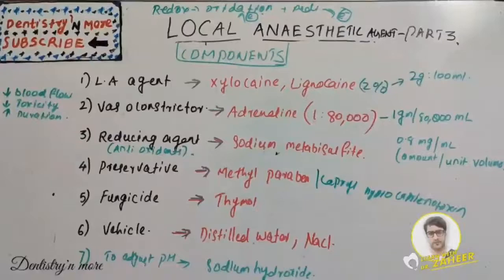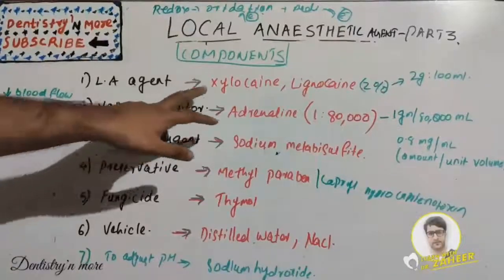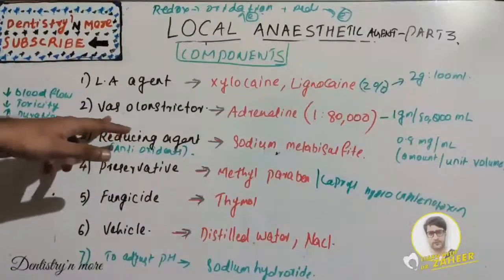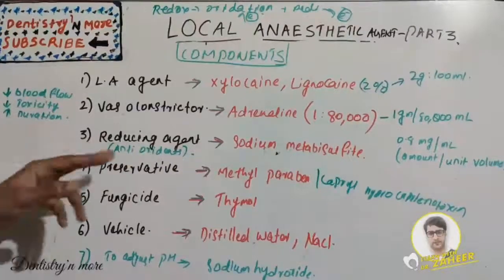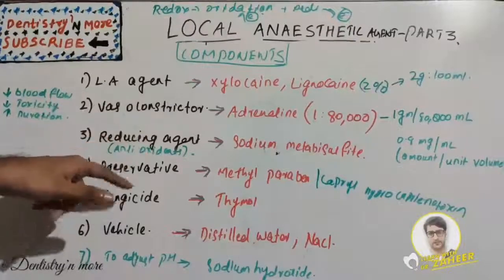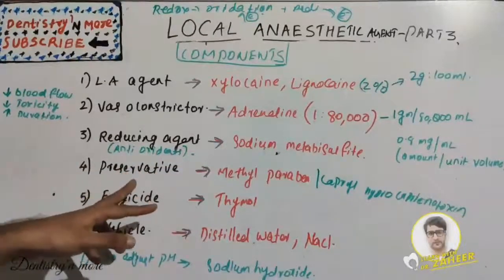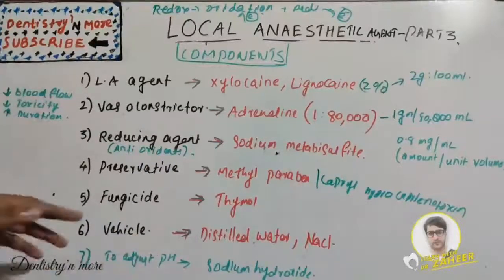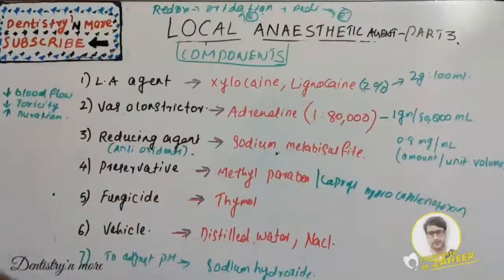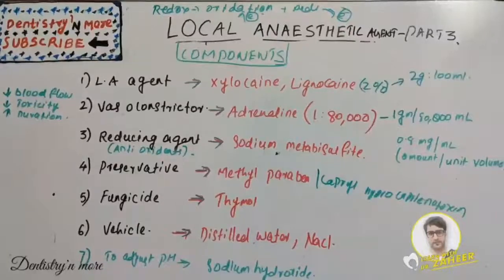To summarize, the components of a local anesthetic agent are: basic component xylocaine or lignocaine at 2%; vasoconstrictor adrenaline at 1:80,000 dilution, which decreases blood flow, decreases systemic toxicity, and increases duration; reducing agent sodium metabisulfate as antioxidant; preservative methylparaben; fungicide thymol; vehicle distilled water and sodium chloride; sodium hydroxide to adjust pH; and nitrogen bubbles to prevent oxygen entrapment. This is a commonly asked short essay topic in oral surgery exams.